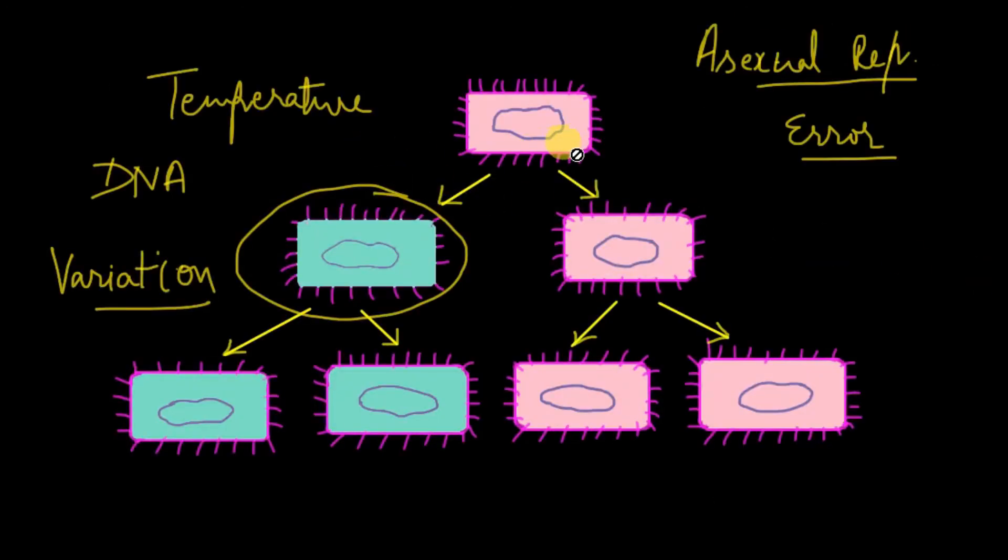These variations can occur. For example, we talk about bacteria. These bacteria also reproduce asexually.